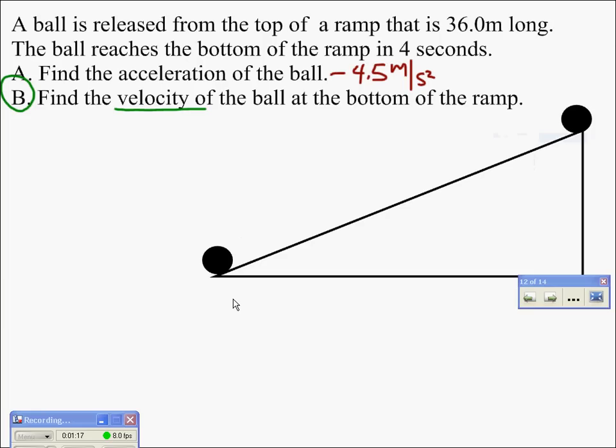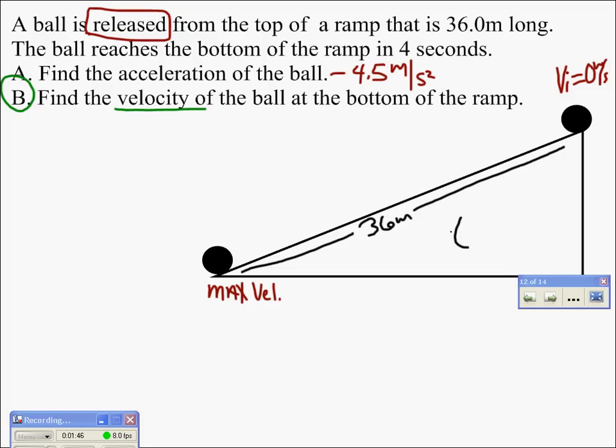At the beginning it has an initial velocity we said to be zero meters per second because it was released with no velocity, but we also know that it's going to gain velocity as it rolls down the hill. So down here will be the max velocity. We haven't changed our 36 meter ramp so it's still 36 meters long, and we also know that the time to get down the ramp is four seconds.